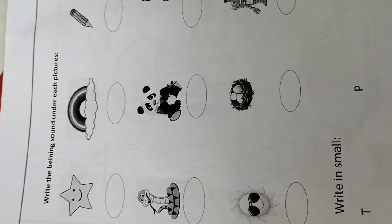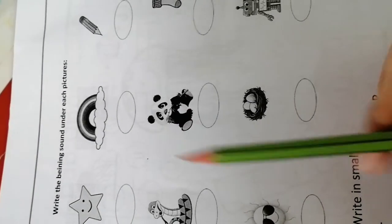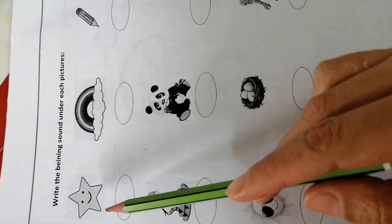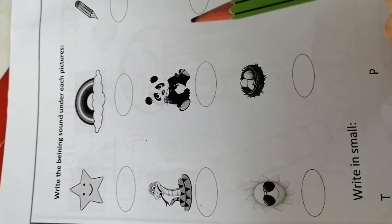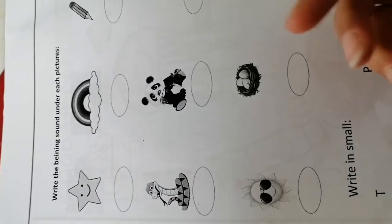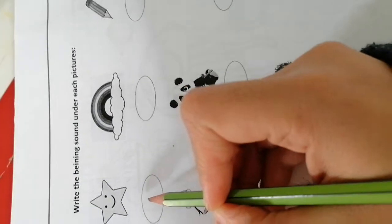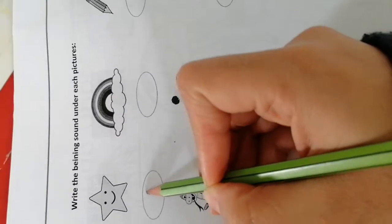Right at the beginning, write the sound under each picture. The first picture is store. Store. It's beginning with sound S.